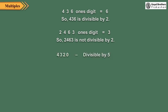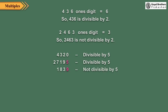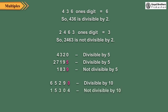A number is divisible by 5 if its 1's digit is either 0 or 5. In 4,320, the 1's digit is 0, and in 27,195, the 1's digit is 5, so these numbers are divisible by 5. In 1,839, the 1's digit is 9, other than 0 or 5, so it is not divisible by 5. A number is divisible by 10 if its 1's digit is 0. The 1's digit of 65,290 is 0, so it is divisible by 10. The 1's digit of 15,304 is 4, which is other than 0, so it is not divisible by 10.